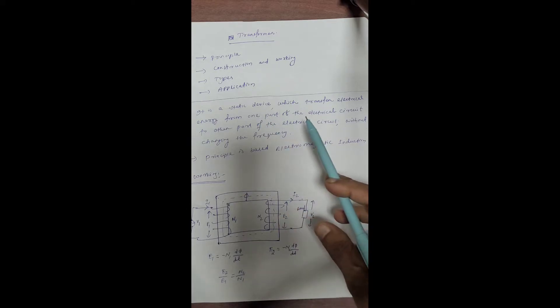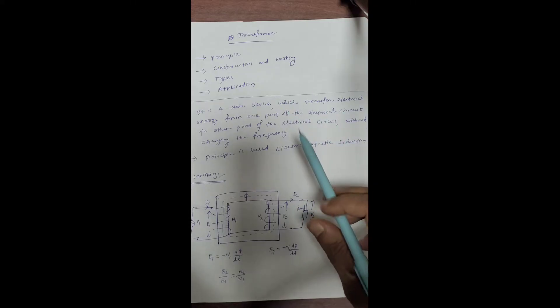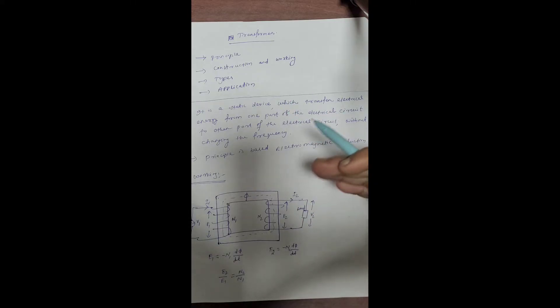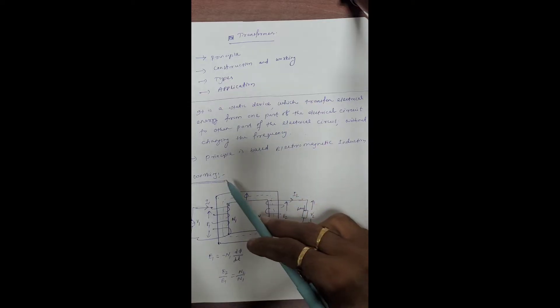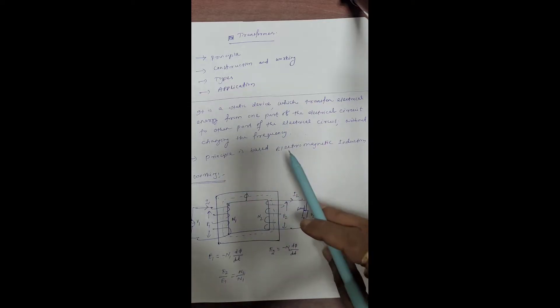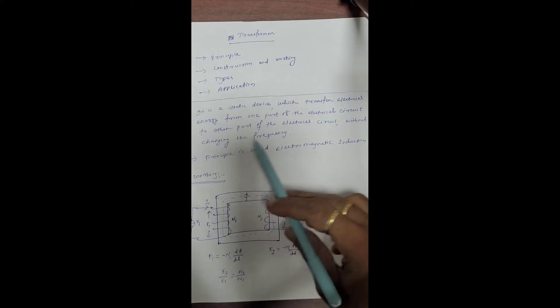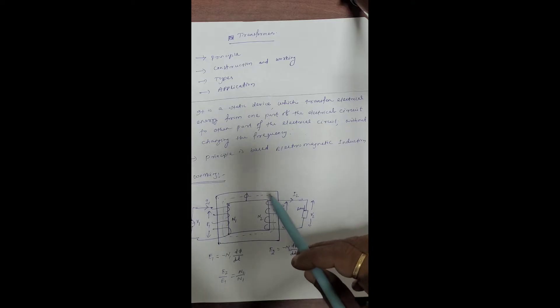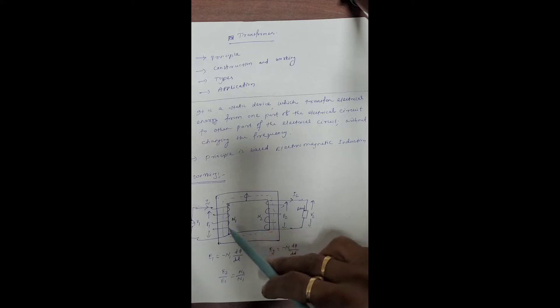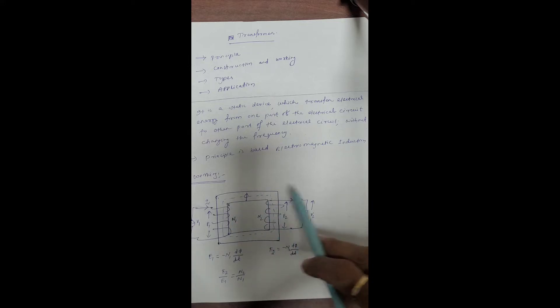In other words, a transformer is a static piece of equipment which is used either for raising or lowering the voltage of an alternating supply with a corresponding decrease or increase in current. A transformer consists of two windings — primary winding and secondary winding — wound on a common laminated magnetic core made up of silicon steel. The winding connected to the AC source side is called primary winding, and the winding connected across the load side is called secondary winding.